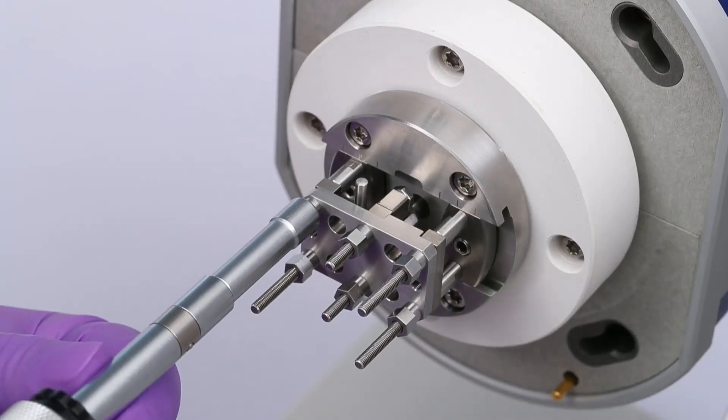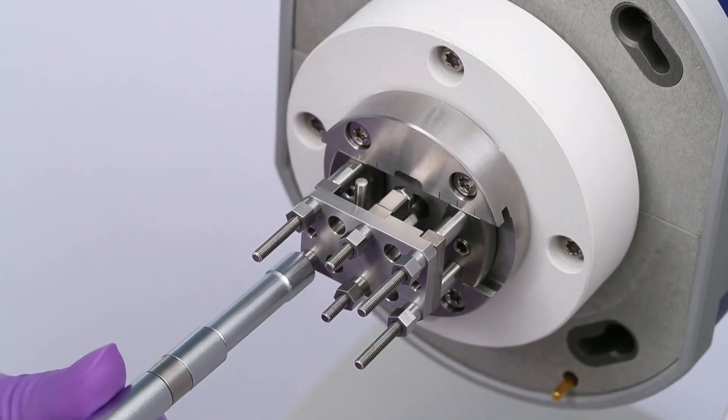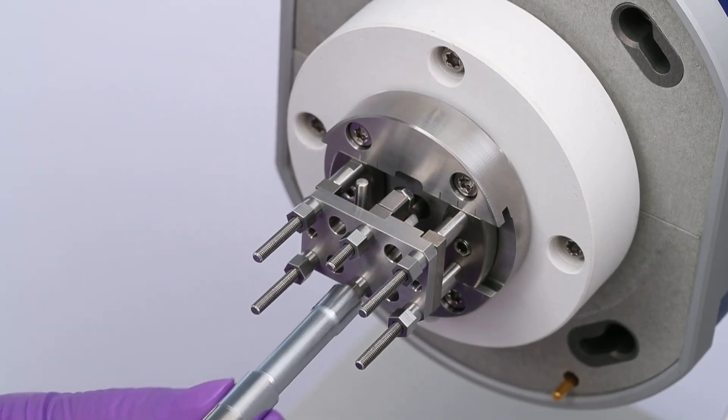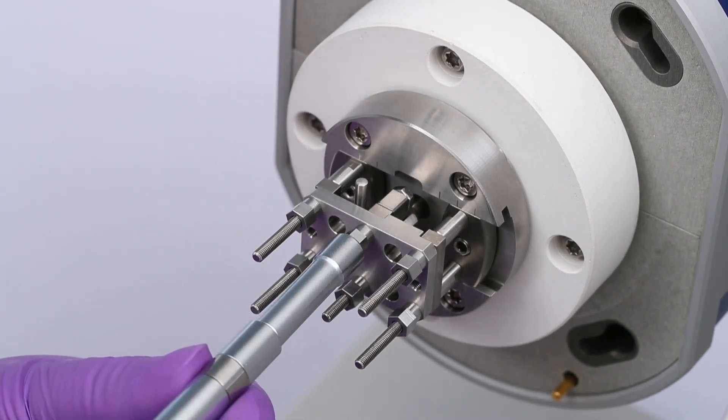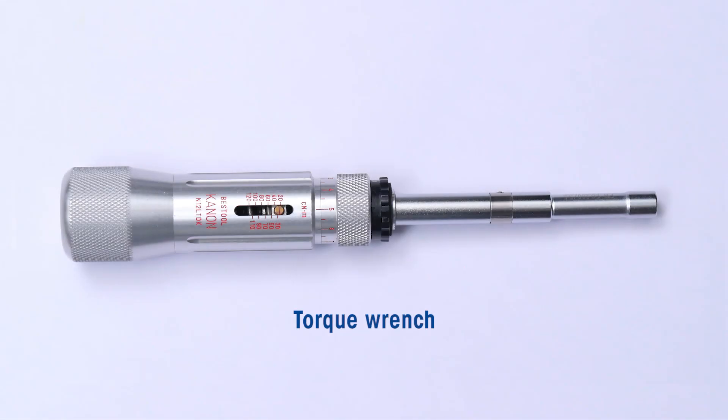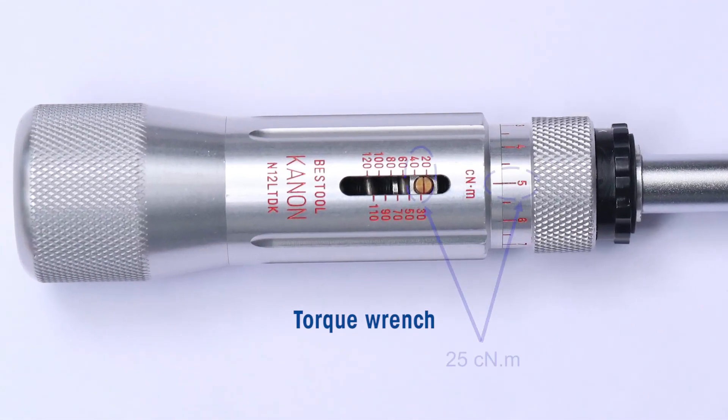Fasten the alignment insert with four outer extended nuts, followed by two middle extended nuts using the torque wrench, which must be set to a torque of 25 cm.